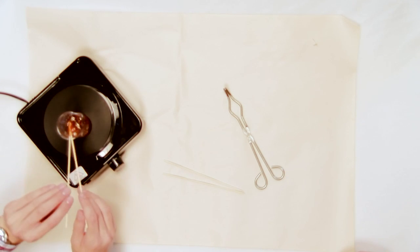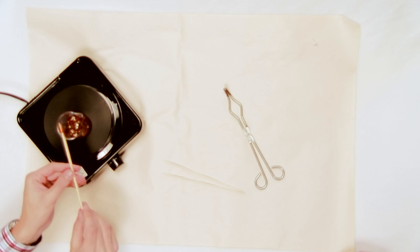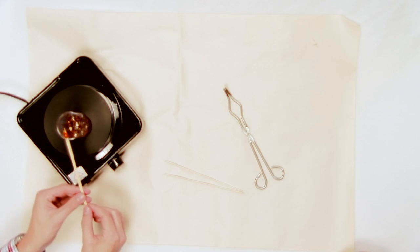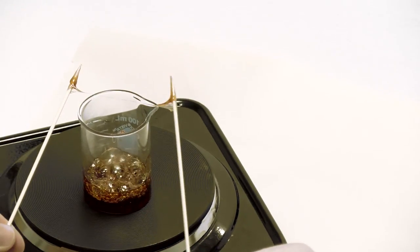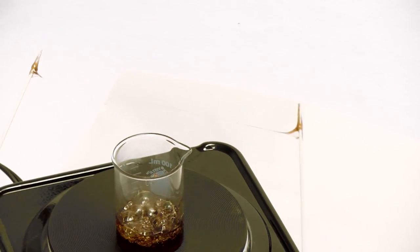Once the Jolly Ranchers are in a liquid form, use the wooden skewer or popsicle stick to pull one fiber from the beaker by dipping the skewer into the molten Jolly Ranchers and removing it slowly. Allow students to take turns pulling fibers.